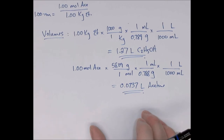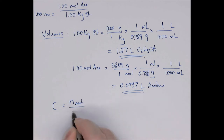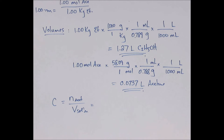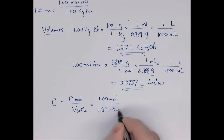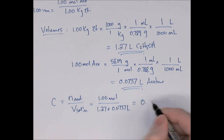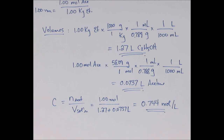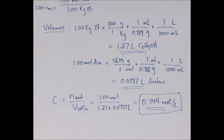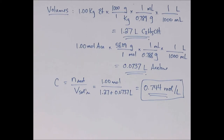Now for molarity: moles of acetone divided by volume of solution. We have 1 mole of acetone, and the total volume is 1.27 + 0.0737 = 1.344 liters. So the molarity = 1.00 ÷ 1.344 = 0.744 M.